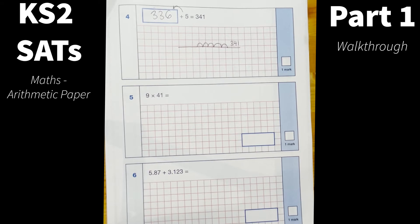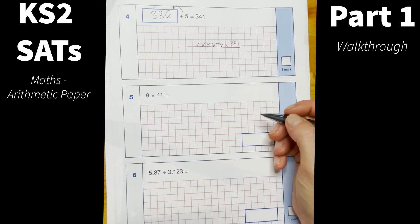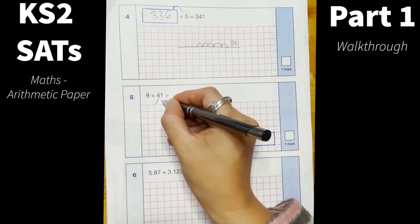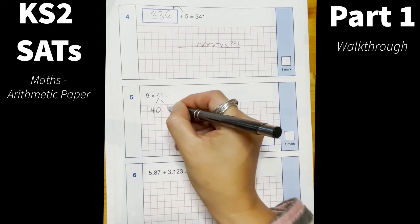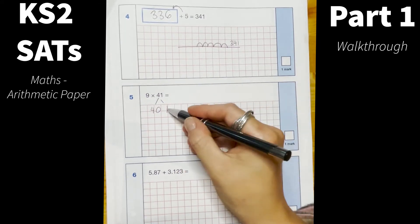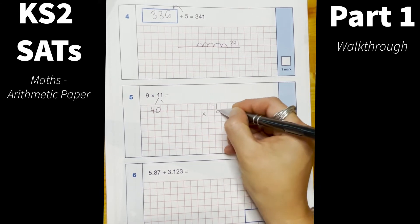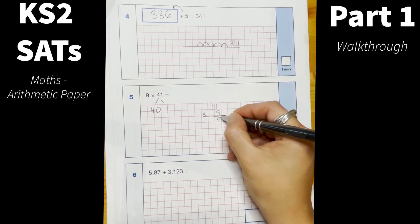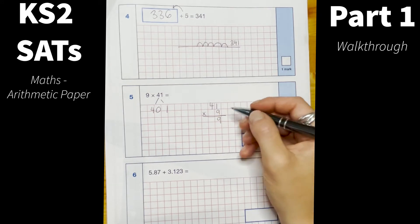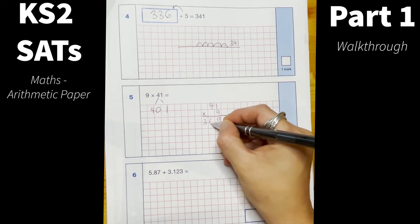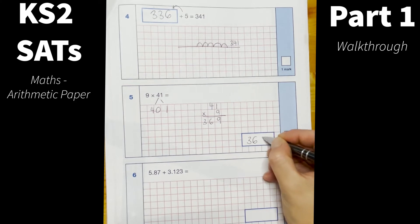Okay number 5, 9 times 41. So a couple of different strategies they could use to do this, they could partition 40 and 1 and then do 9 times the 40 and 9 times the 1. Or 41 times 9, 9 times 1 is 9, 9 times 4 is 36 and our answer 369.